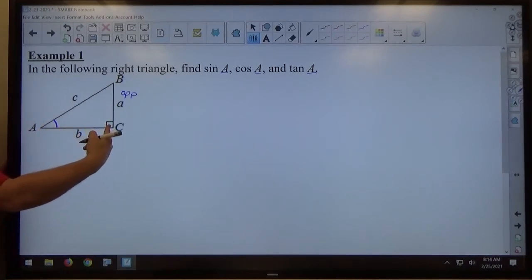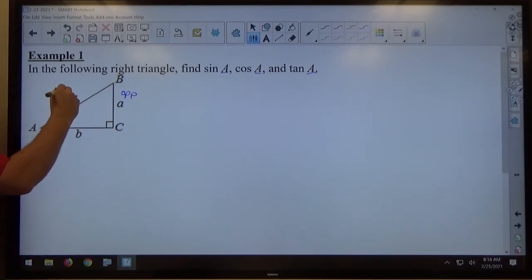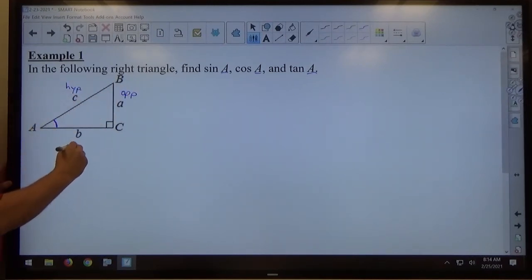If I'm at the right angle and I go across the triangle, that gets me to the hypotenuse. And again, once you've identified those two sides, the remaining side must be the adjacent side.